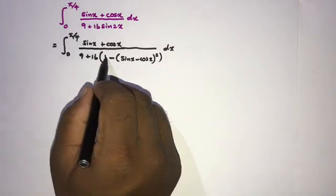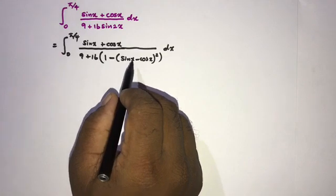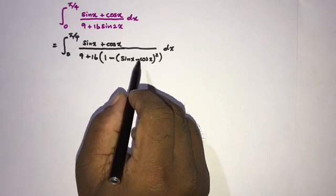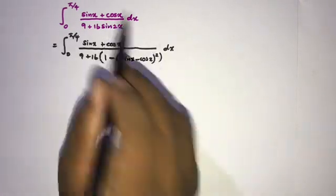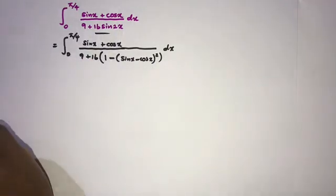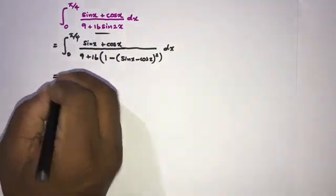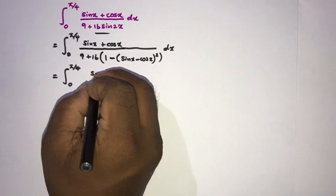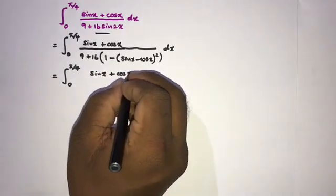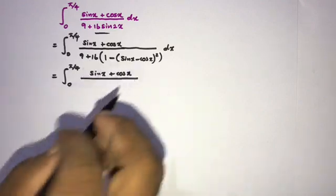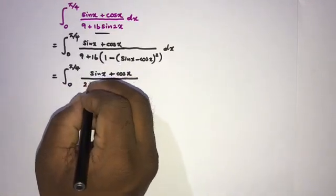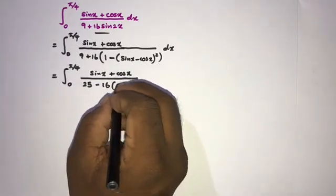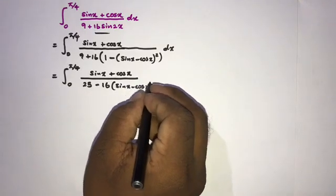If we simplify: sin²x + cos²x = 1, so the 1's cancel, and the middle term gives −(−2 sin x cos x) = +2 sin x cos x = sin 2x. So we get the previous integral. Then the integral from 0 to π/4 of (sin x + cos x) over (9 + 16·(1 − (sin x − cos x)²)) simplifies to (sin x + cos x) over (25 − 16·(sin x − cos x)²) dx.